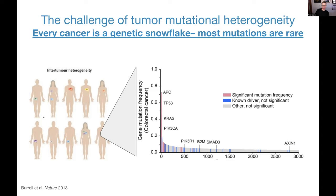There are famous cancer genes like P53 that are mutated in something like half of tumors. But beyond that handful of very well-characterized, infamous cancer genes, what you have is a sea of rare mutations which differ from patient to patient. Here is an example for colon cancer, ranking genes by their overall mutation frequency. APC is mutated in about 70-plus percent of tumors, followed by P53, followed by KRAS. But once you're past gene 40 or 50 in this ranking, you're looking at genes mutated in less than 10% of colorectal tumors.